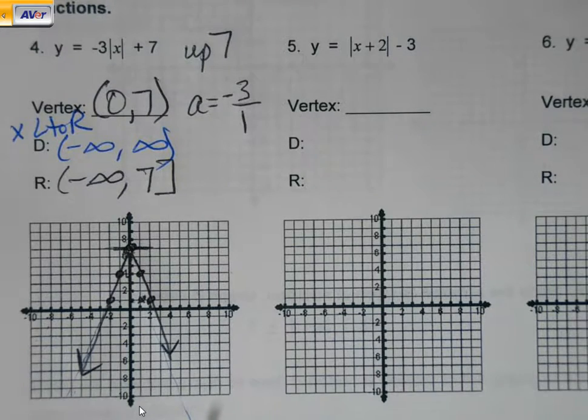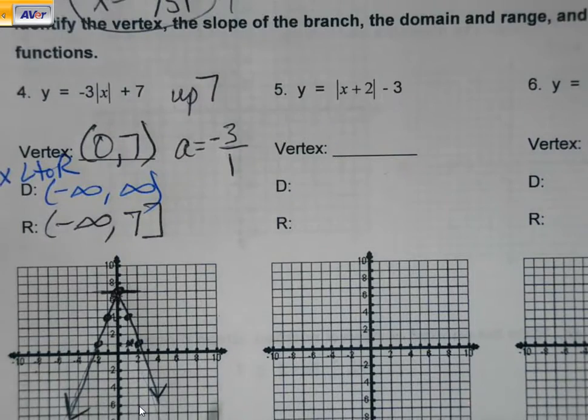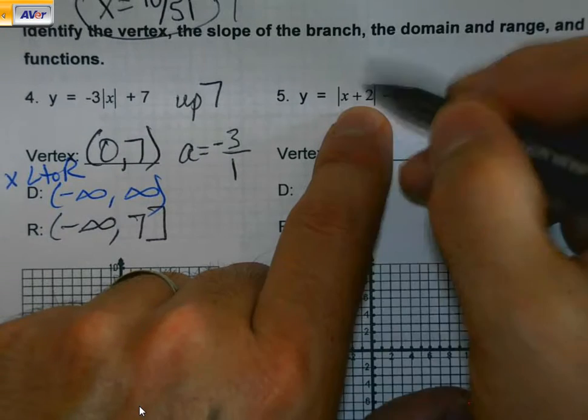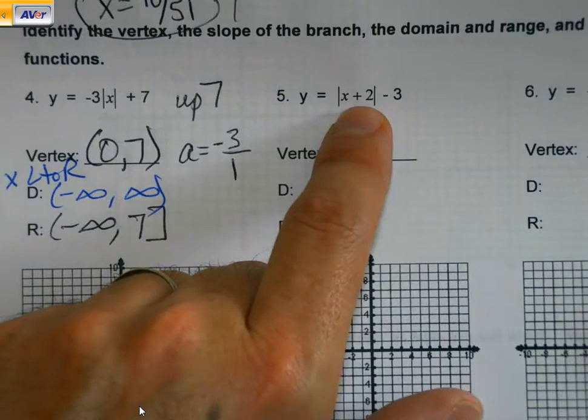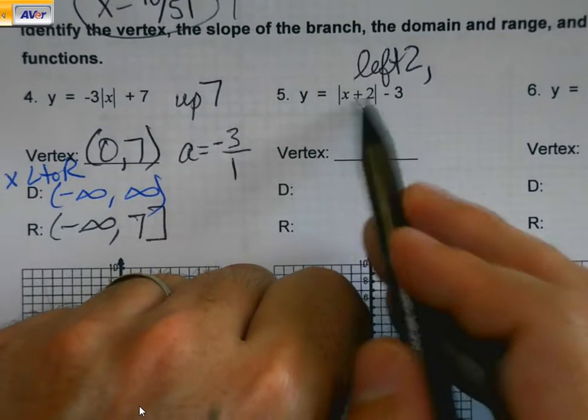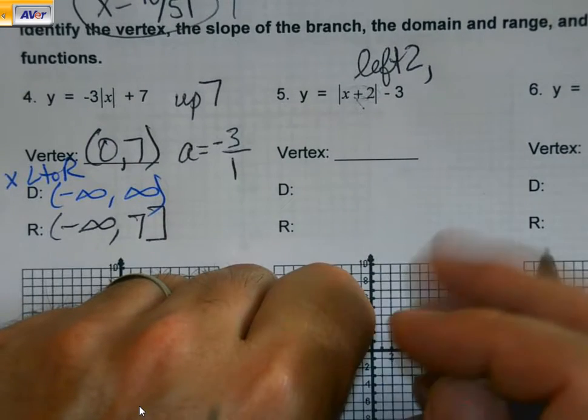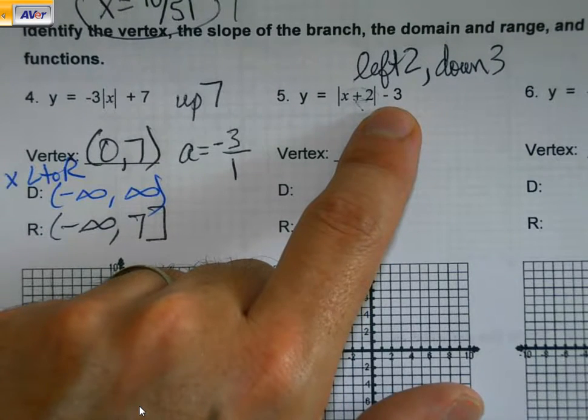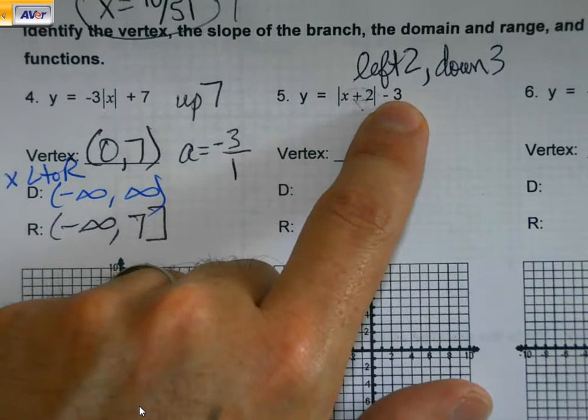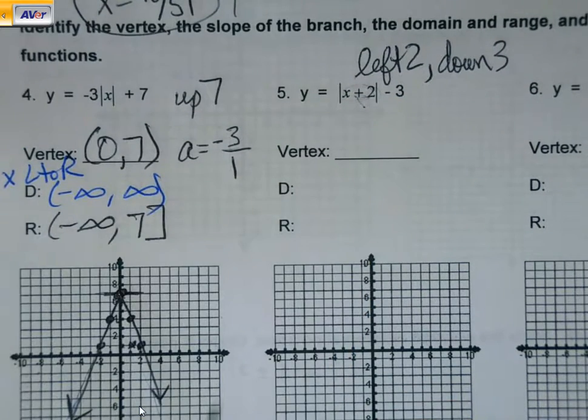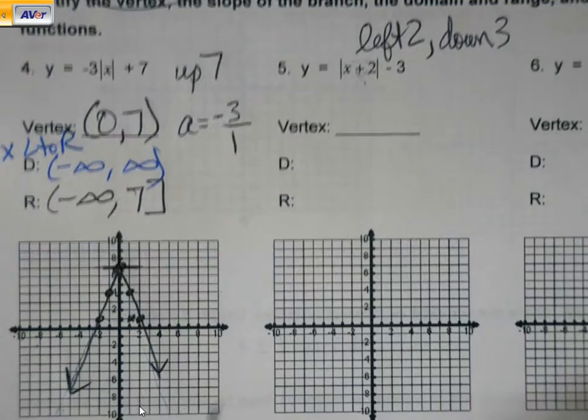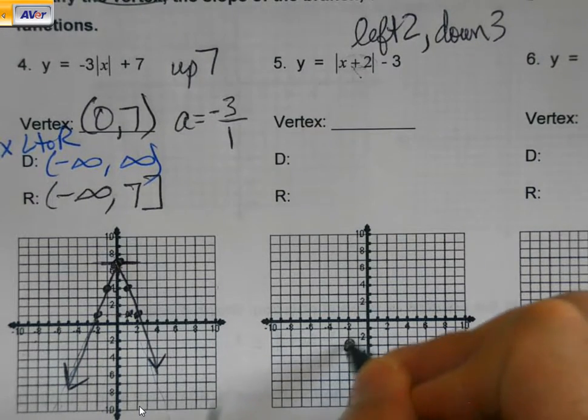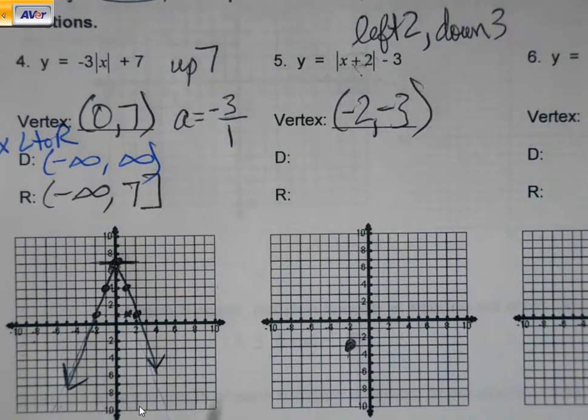Number 5. Same deal. I've got two shifts this time. Two transformations. Remember, what's inside the absolute value is the opposite of what you think. So that plus 2 would be left 2. Always my left and right on the inside of the absolute value. And whatever's on the outside is true to form, down 3. So left 2, down 3. I've got my vertex.